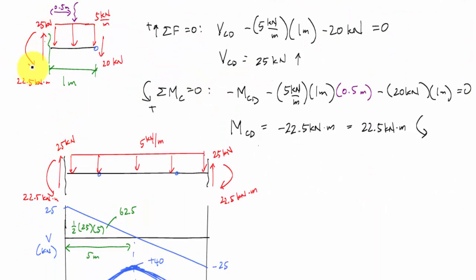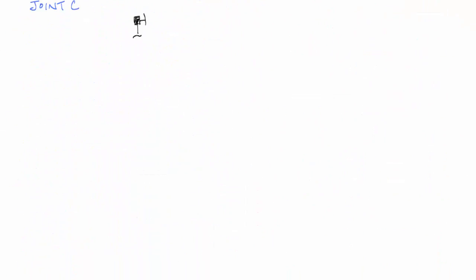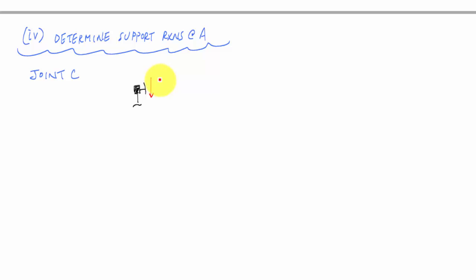And applied to joint C, it's going to be equal and opposite. So I would have 25 kilonewtons pointing down and an end moment going like this of 22.5 kilonewton meters.